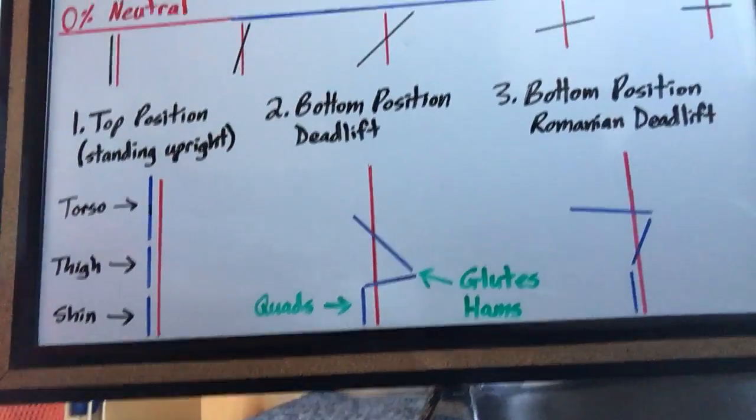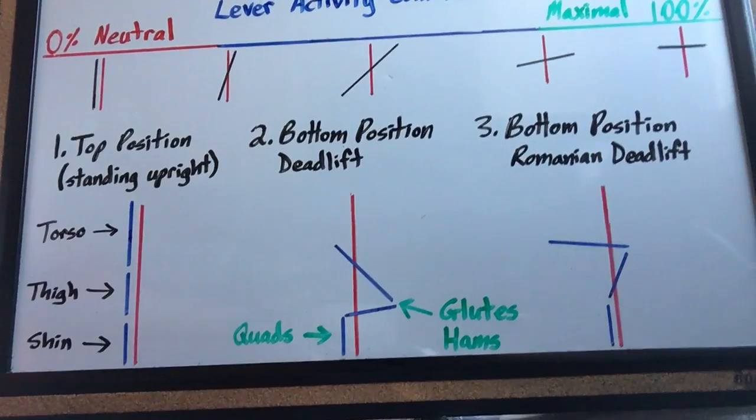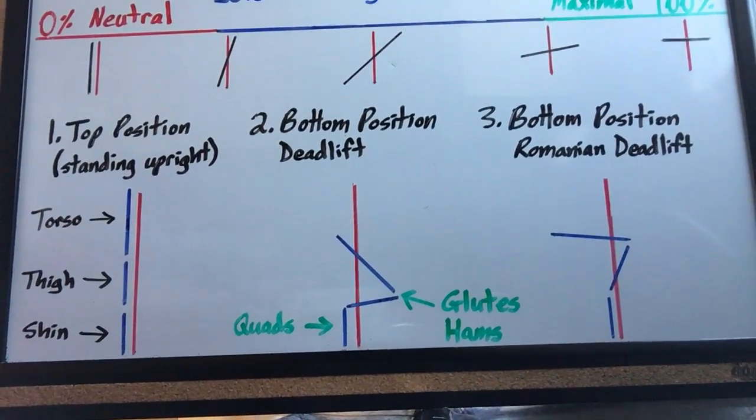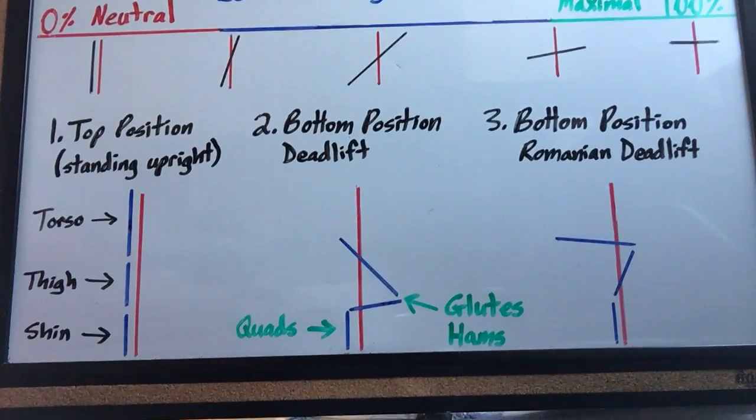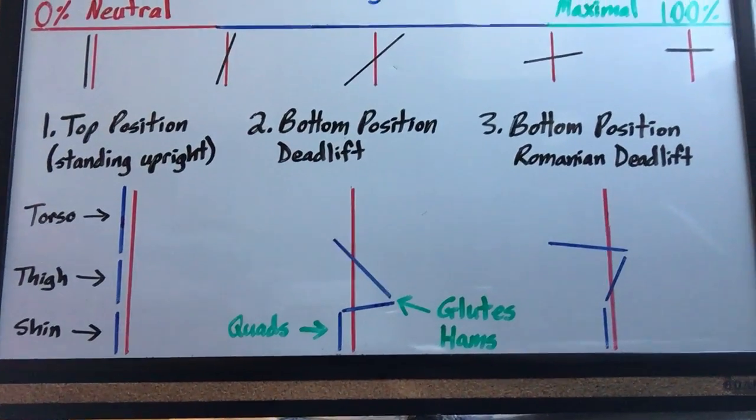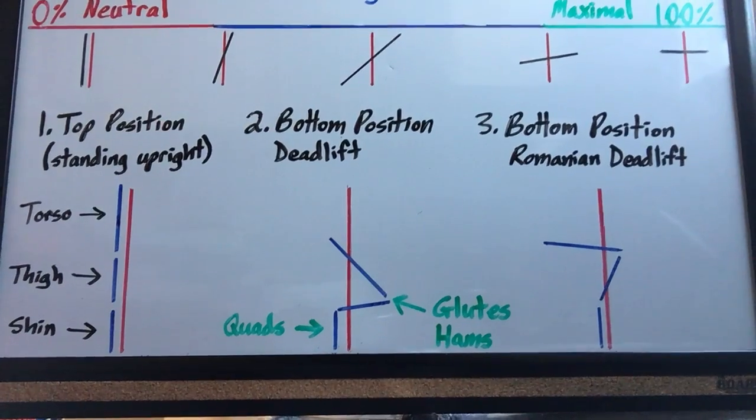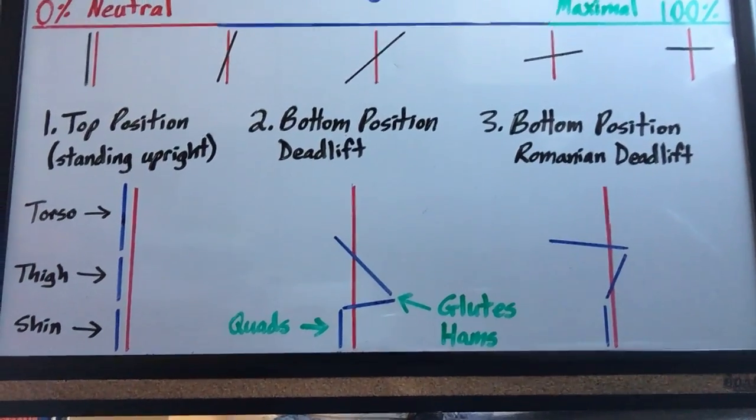We've got three diagrams on the board. We've got the top position of the deadlift. So no matter how you deadlift, this is what it's going to look like when you lift the bar off the floor and you come to a standing position. Your torso will be stacked above your thigh, which will be stacked above your shin. All three levers will be parallel to the direction of resistance, therefore they are inactive in this position.